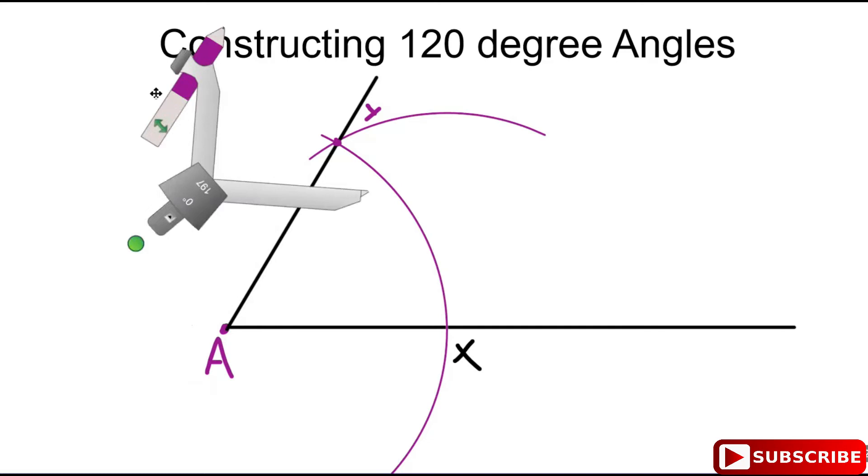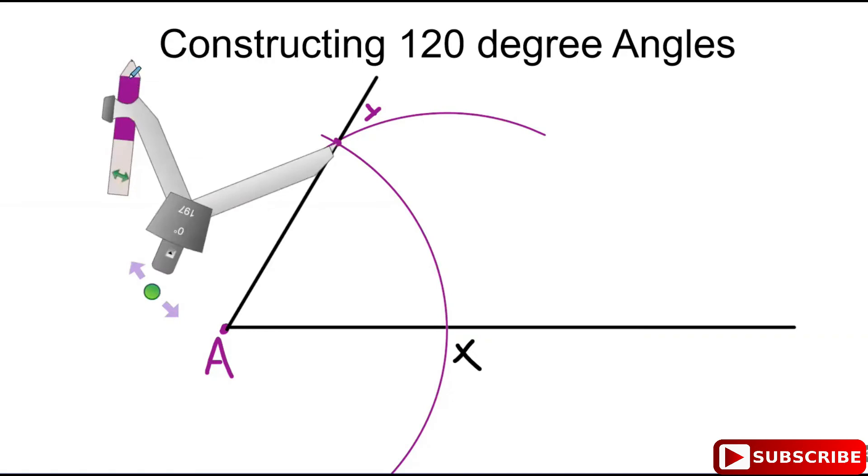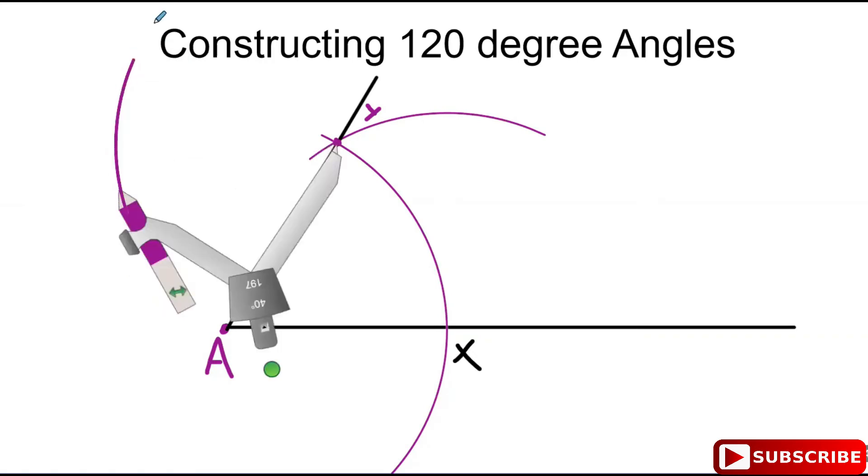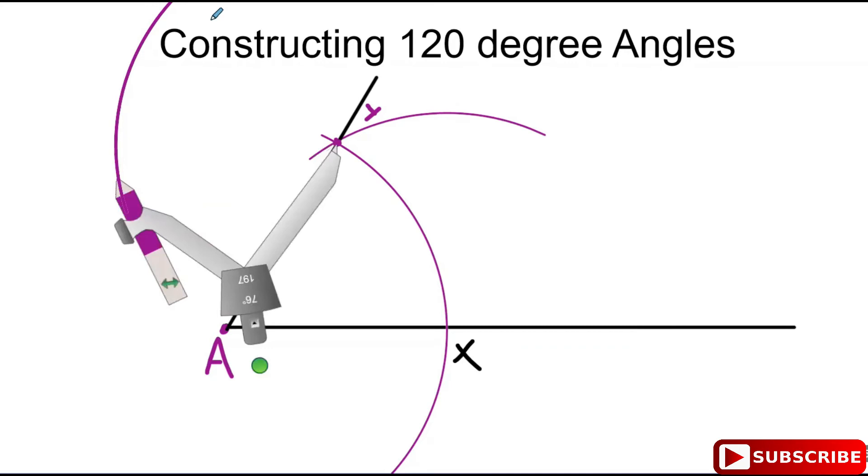Move your compass to Y and swing an arc from Y somewhere around here. After we swing an arc from Y, we continue to the next step.